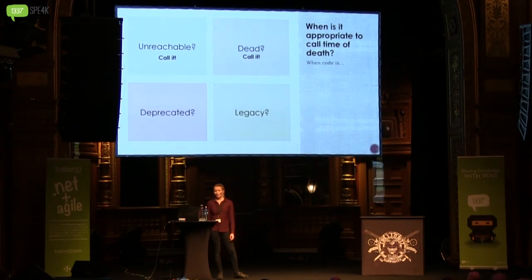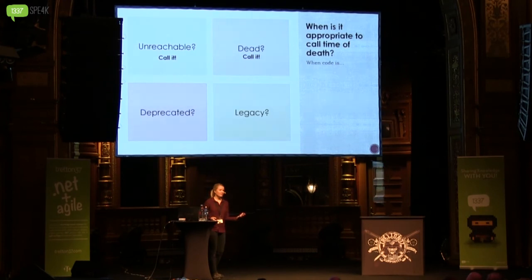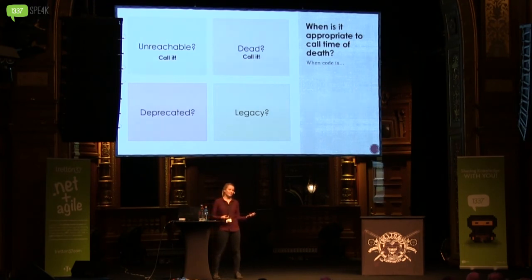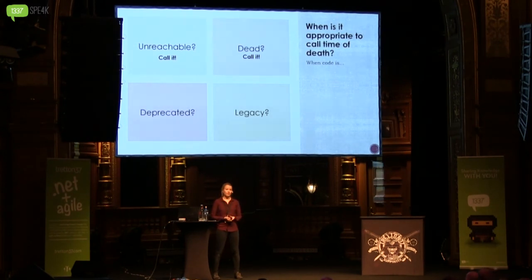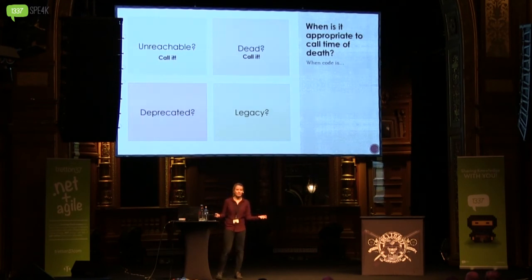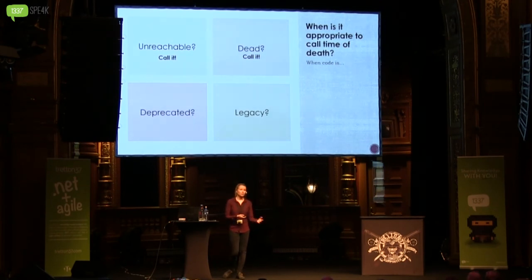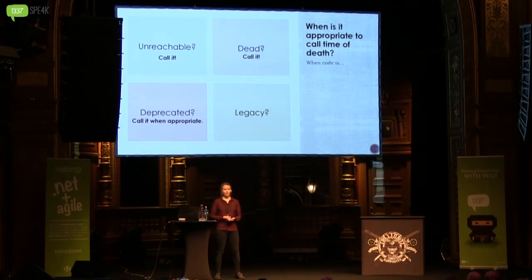What about deprecated code? Deprecated code is code that is superseded or obsolete — it's code that should be avoided by other developers, and the only reason it's there is backwards compatibility. Deprecated code needs to exist for some period of time, but what you're essentially telling other developers is that you are going to call time of death on this code at some point — you're just not sure exactly when.